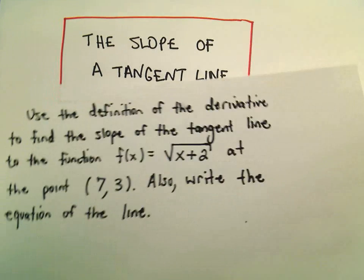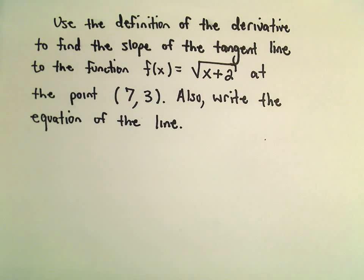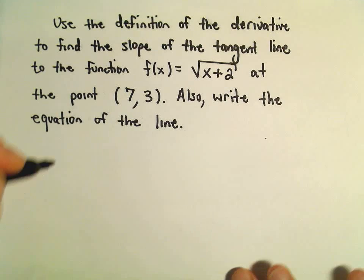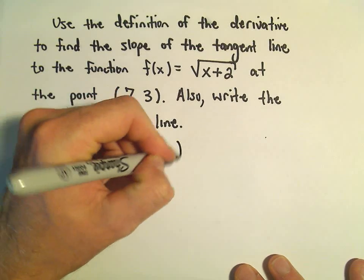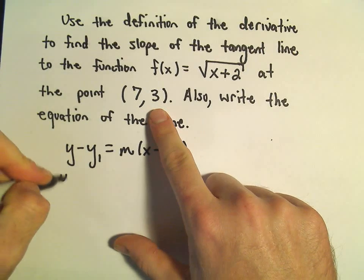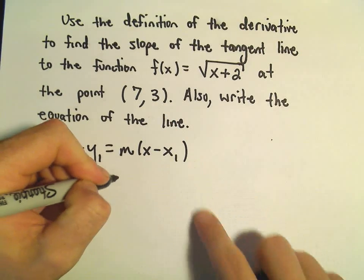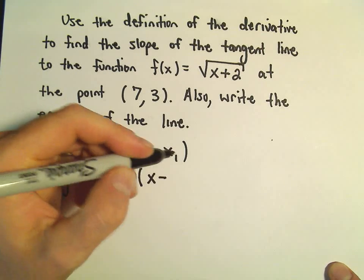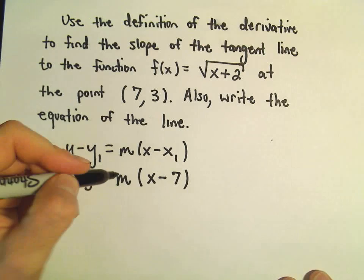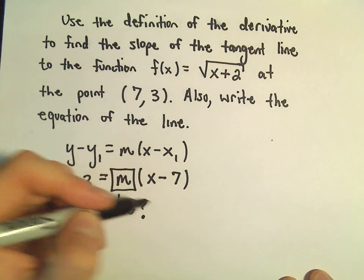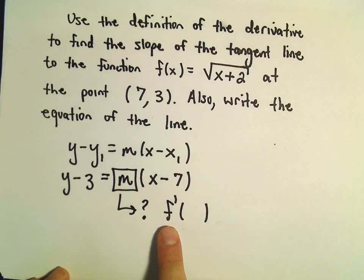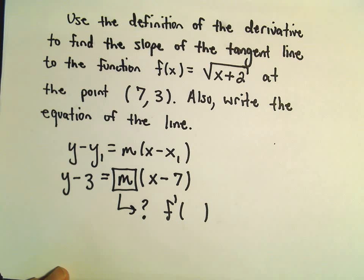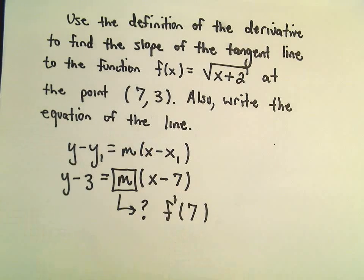The only hard part for the equation of the tangent line is just finding the slope. We use y minus y₁ equals m times x minus x₁ — that's the point-slope formula. We're already given the y-coordinate, so we know it's going to be y minus 3, and then x minus 7. The only thing we have to figure out is the slope, which is going to be the derivative.